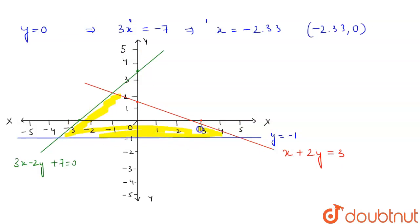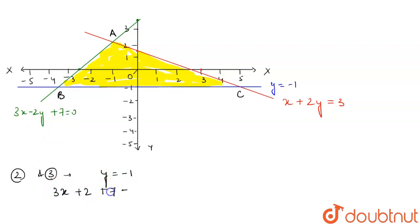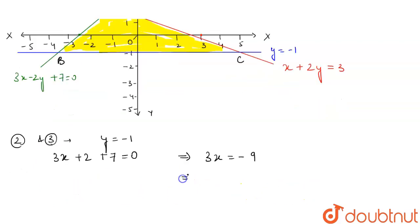To find the area of this triangle, we first find the points of intersection. We name them A, B, and C. Point B is the intersection of line 2 and line 3. Substituting y = -1 into 3x - 2y + 7 = 0 gives 3x + 2 + 7 = 0, so 3x = -9, therefore x = -3. So B = (-3, -1).